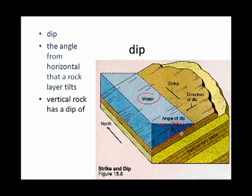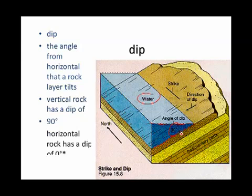If the rock were vertical, it would have a dip of 90 degrees, whereas horizontal rock wouldn't dip at all. Its dip would be zero.